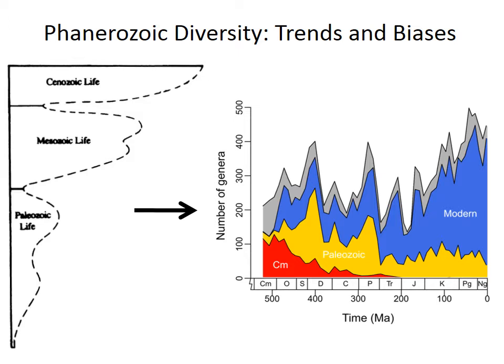The fossil record is the only way that we have to reconstruct past diversity. You might be wondering, how hard can this be? You just count the number of taxa. Well, you'll see in the next few minutes how it's actually a pretty complicated subject.